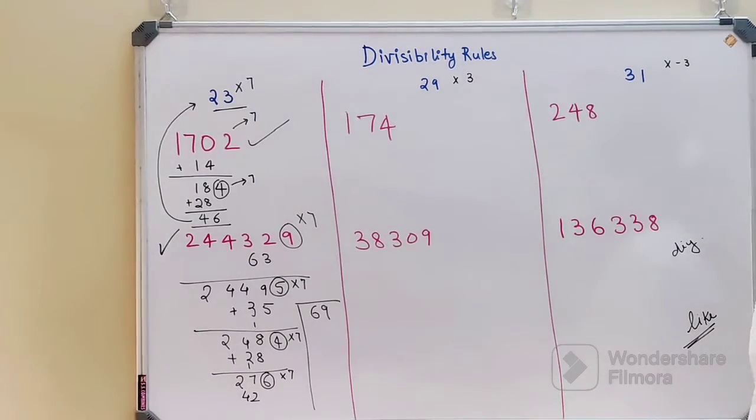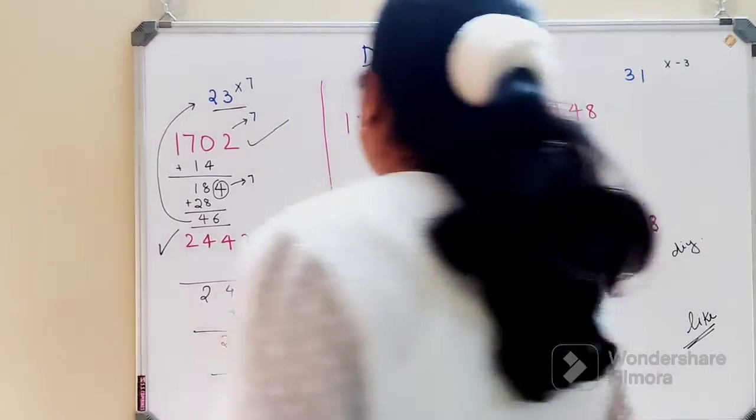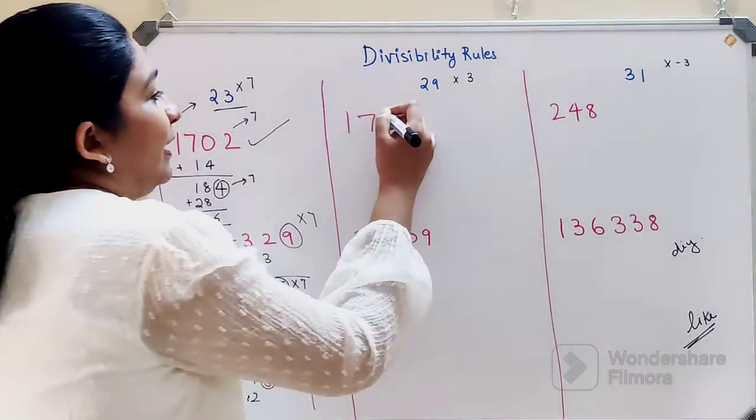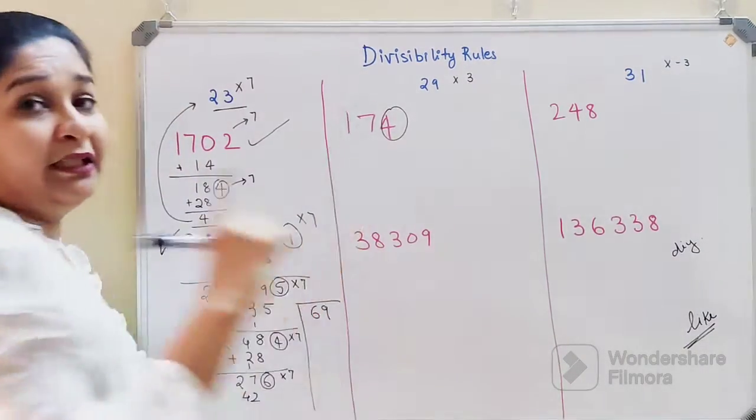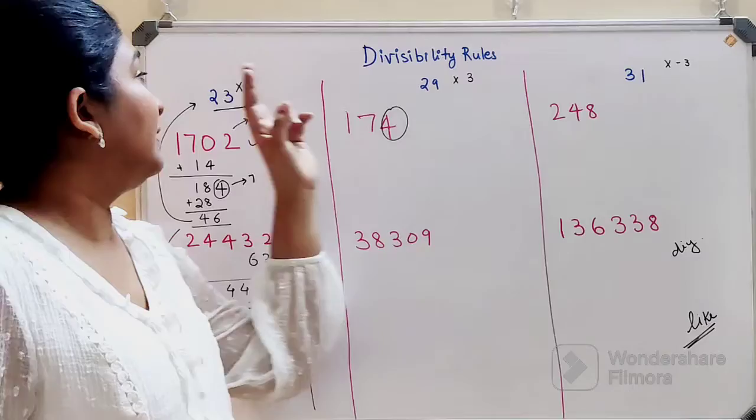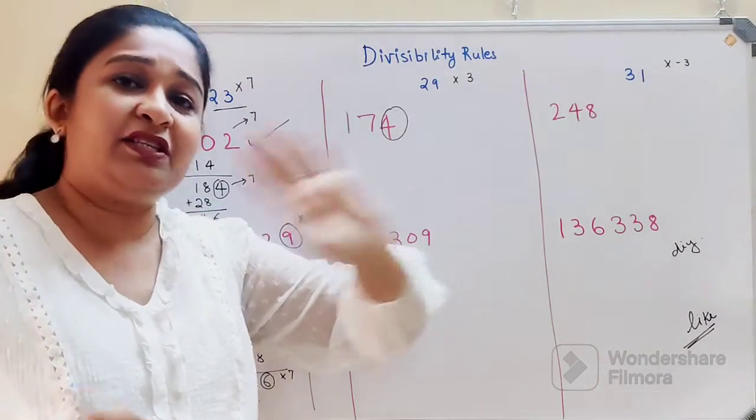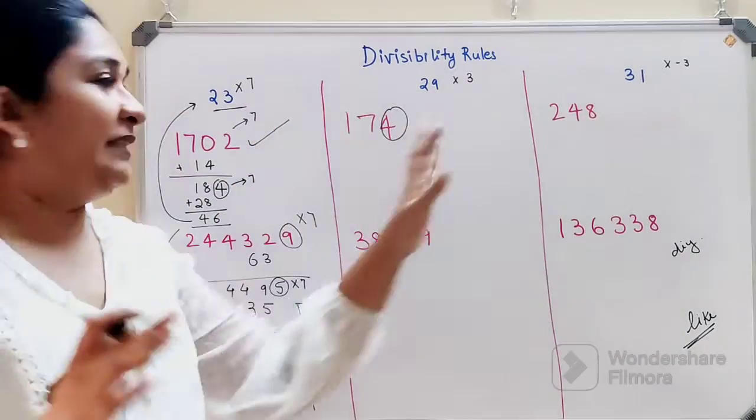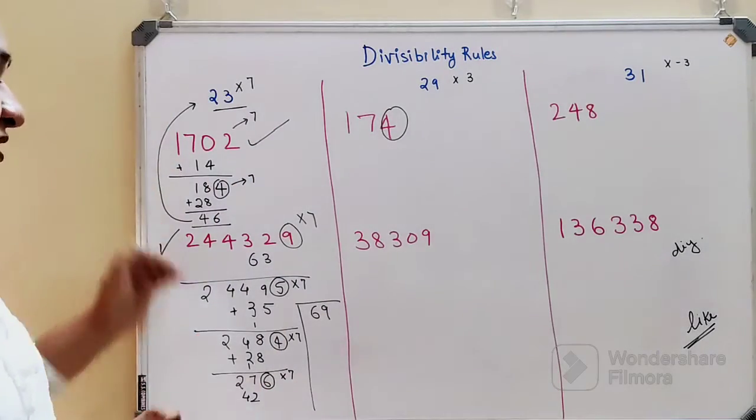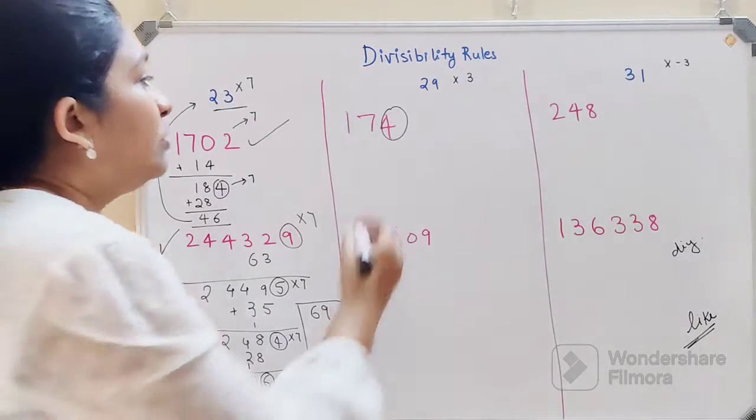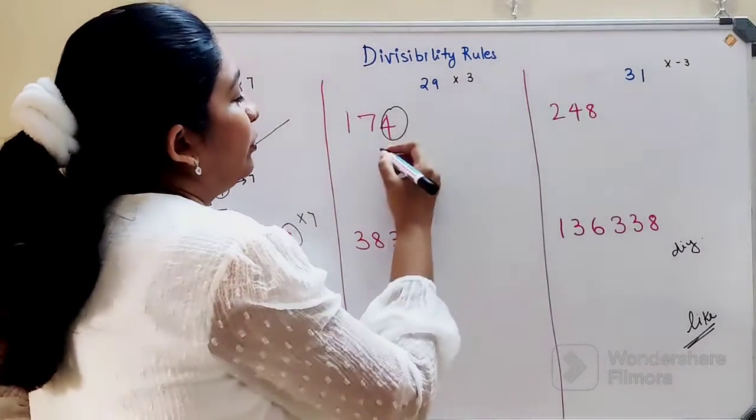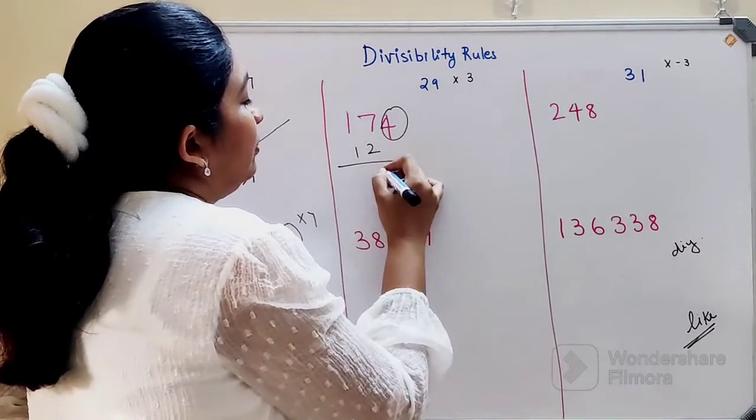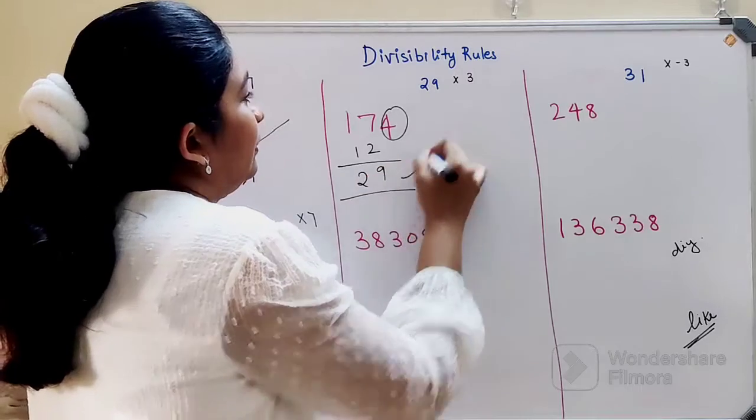Now for 29, we multiply by 3. Please remember, these numbers are super important—if you remember this, your entire problem is solved. The entire trick is based on these numbers only. Once you get the hang of addition, it's very easy. Multiply 3 by 4 to get 12, add to get 29.